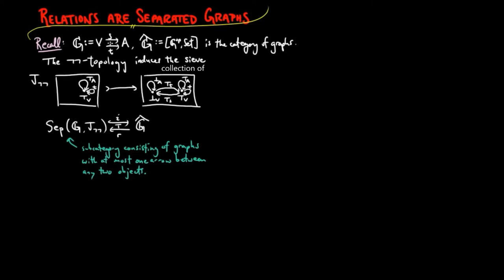In other words, we have the category of set relations isomorphic to the category of separated graphs with respect to the double negation topology.